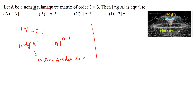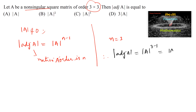Here the order of the matrix is given as 3, so n is equal to 3. Therefore, the determinant of adjoint of A equals det(A) to the power of n-1, that is 3-1, which gives det(A) whole squared.